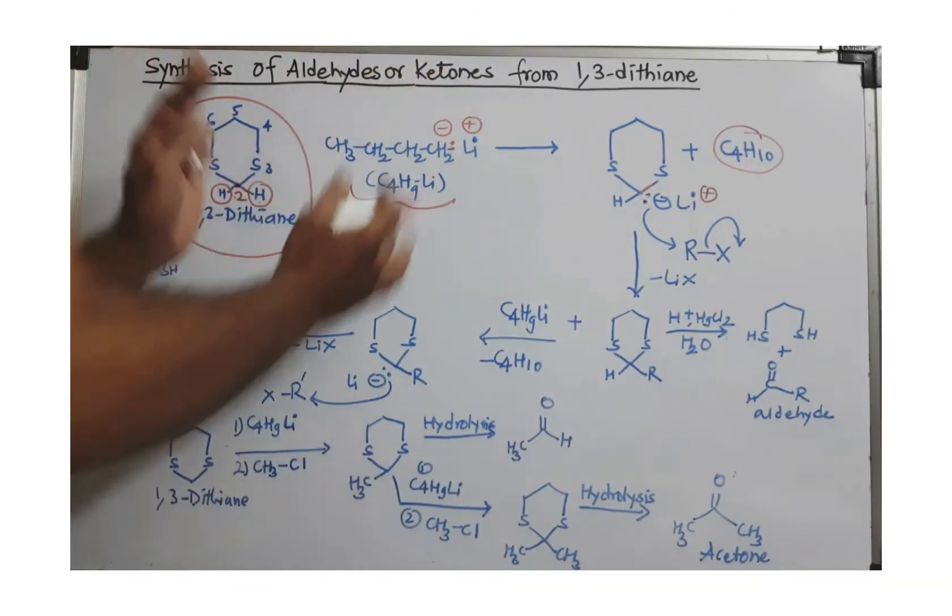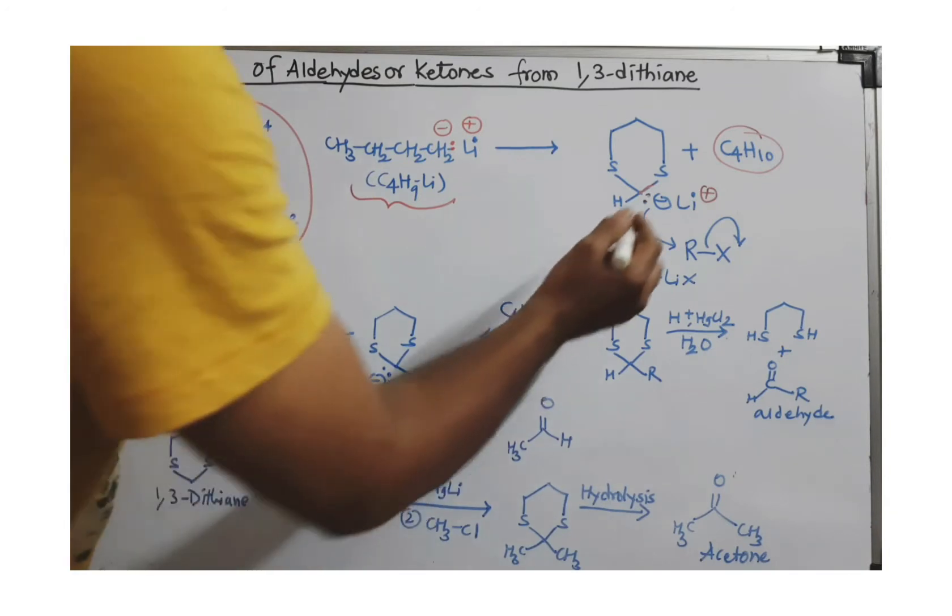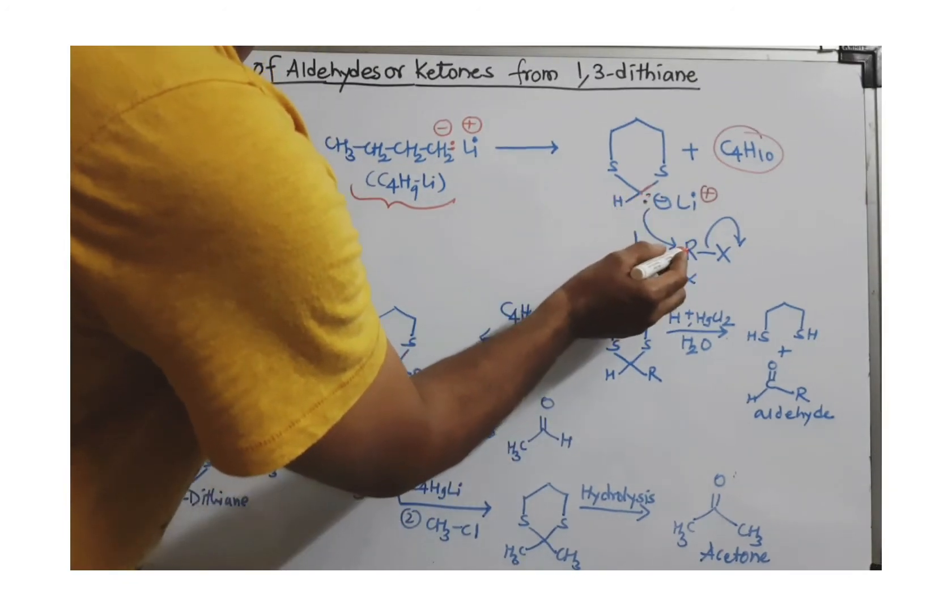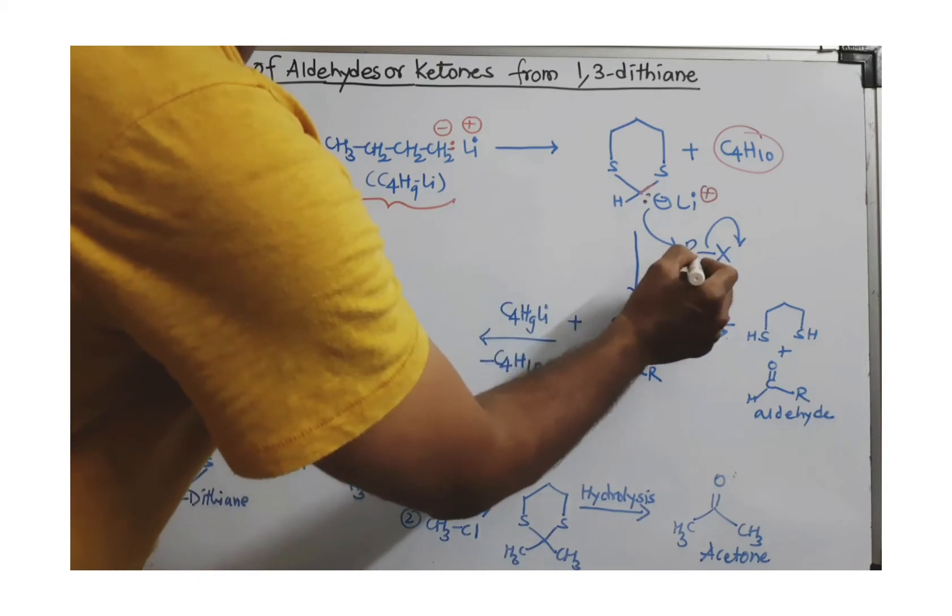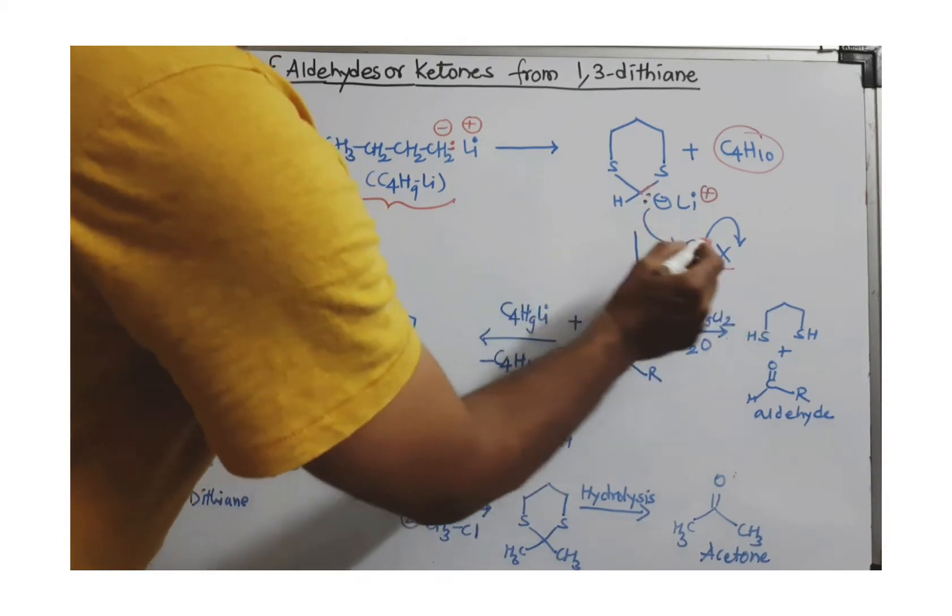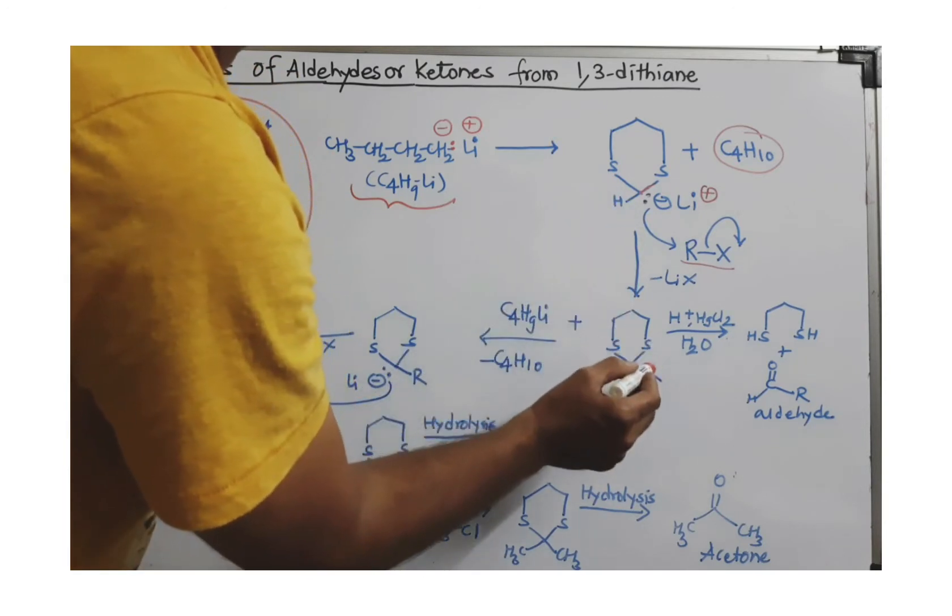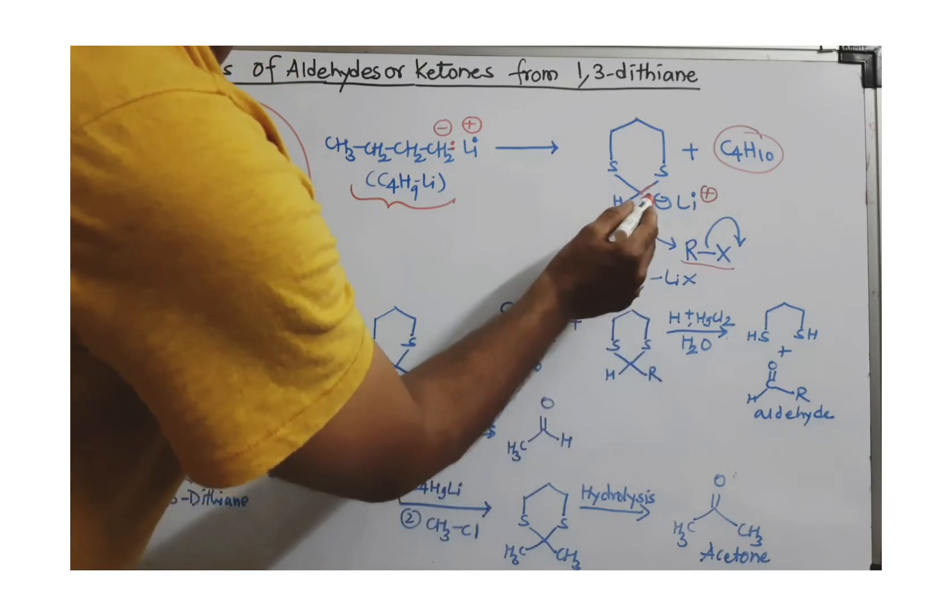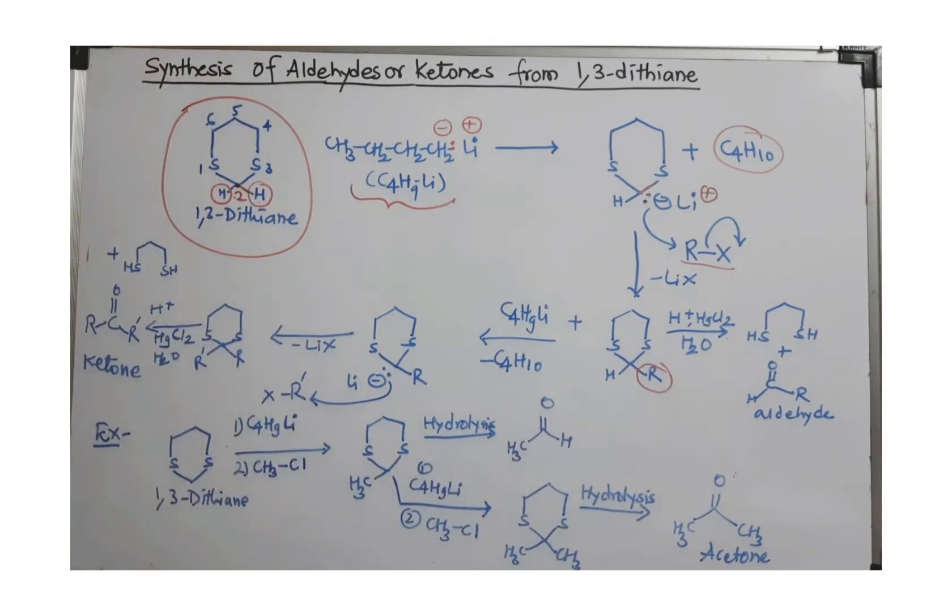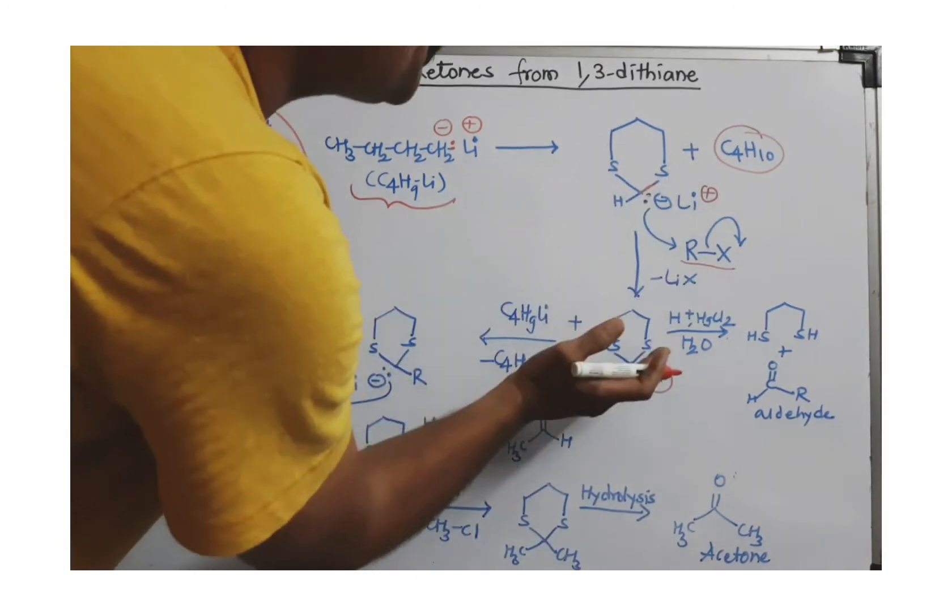The first step is an acid-base reaction. The second step is like an SN2 reaction. This nucleophile is attacking a primary alkyl halide. We need here primary alkyl halide. X is removed, and because of that we can introduce this alkyl group here in the 1,3-dithiane.